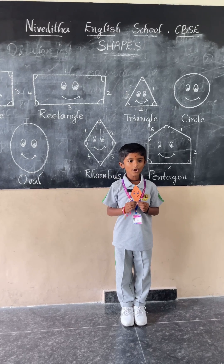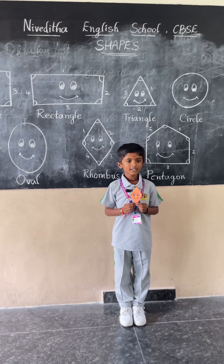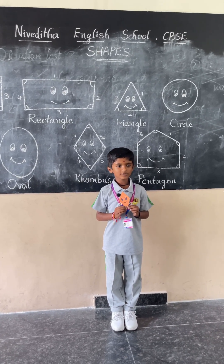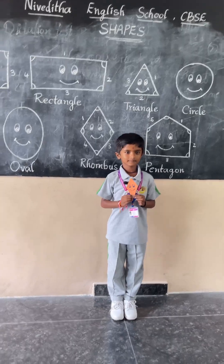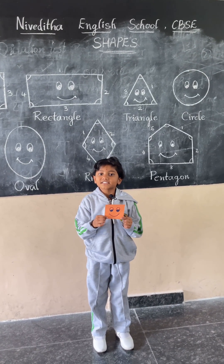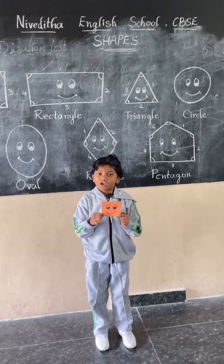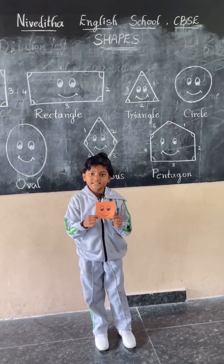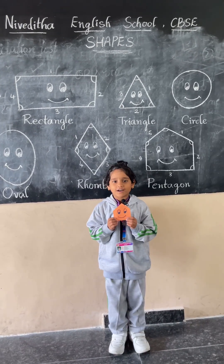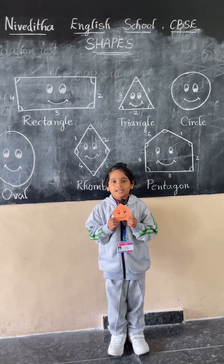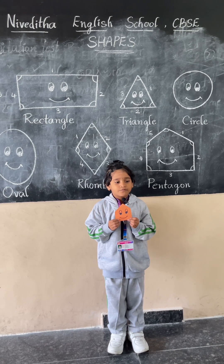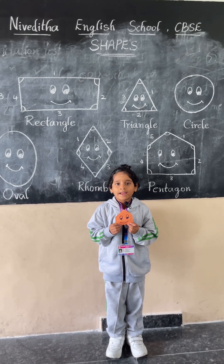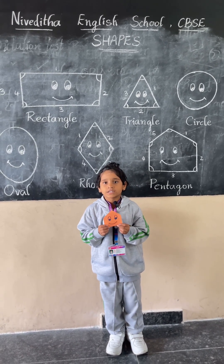Very good. It is a rhombus. It has four corners and four sides. Square — it has four corners and four sides. The pentagon — it has five sides and five corners.